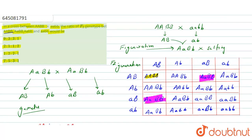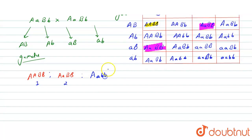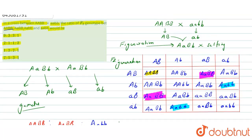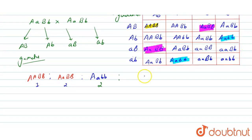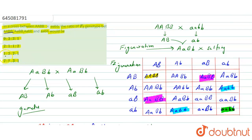The third genotype is Aabb: capital A, small a, small b, small b. Looking through the combinations, these are also two in number. And the last genotype is aabb: small a, small a, small b, small b — there is only one possibility. So the ratio is 1:2:2:1. The correct answer is option 3: 1:2:2:1, whereas the other options are incorrect.